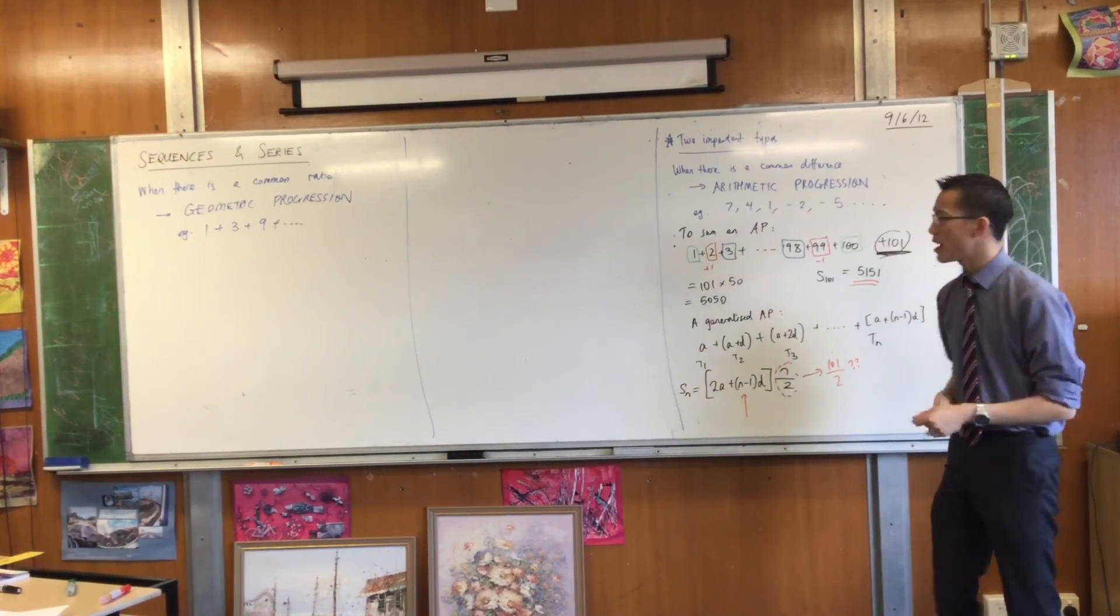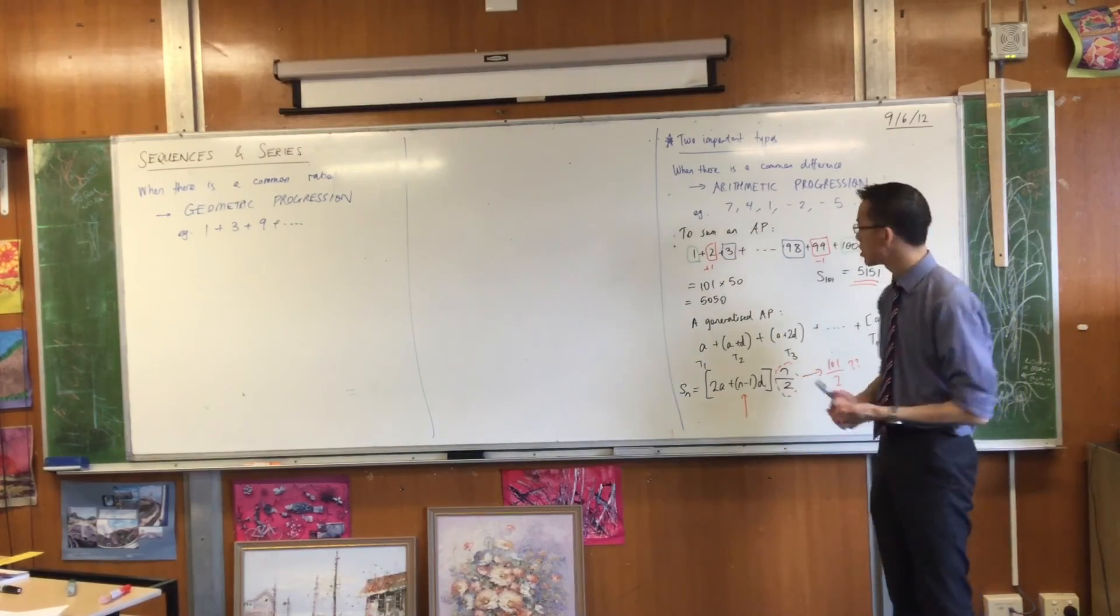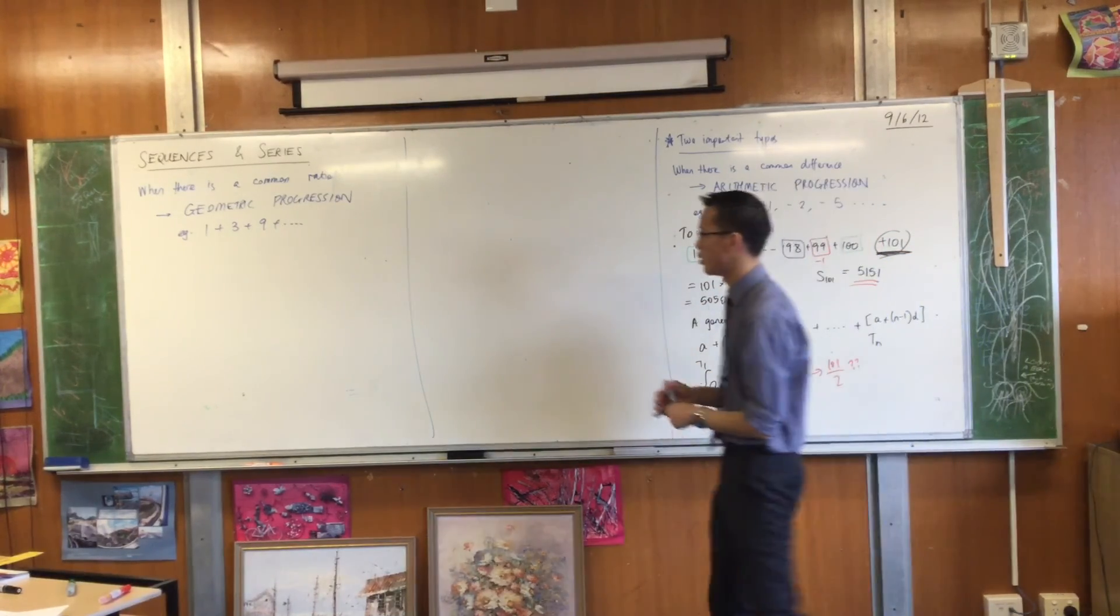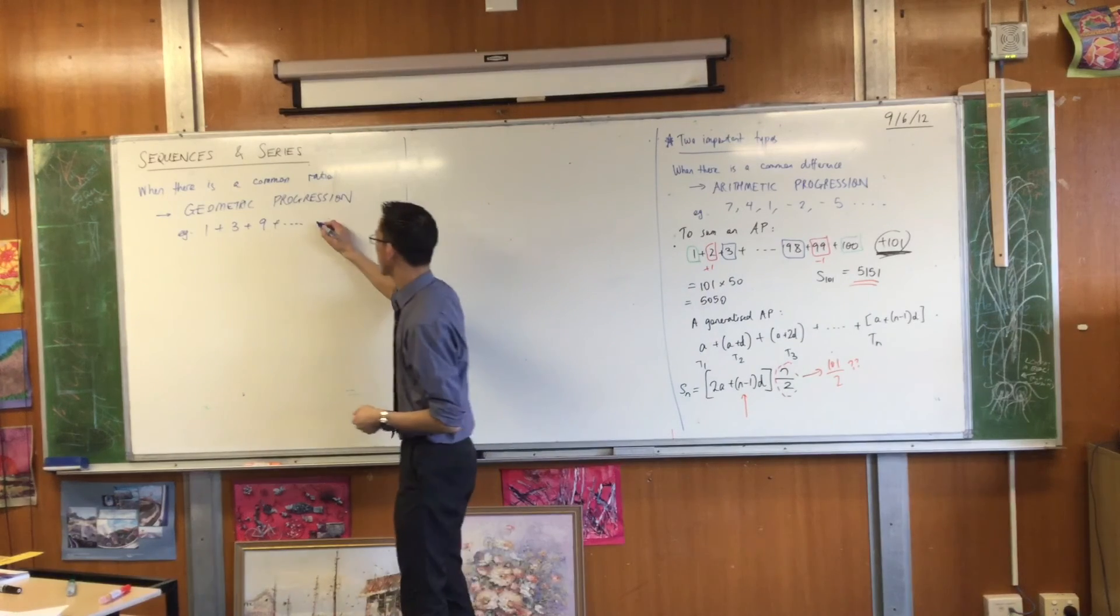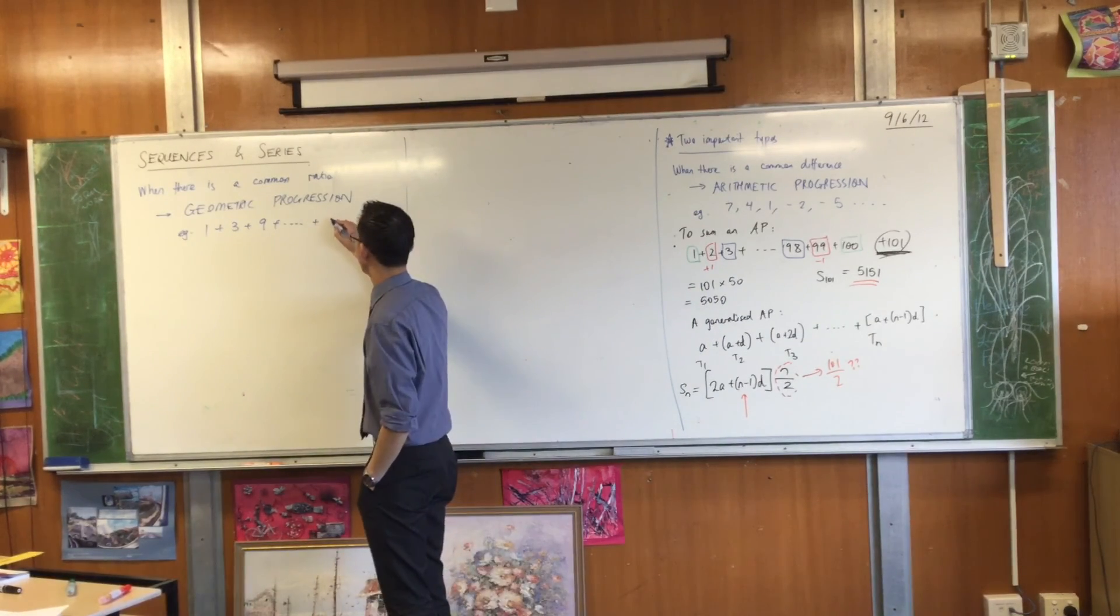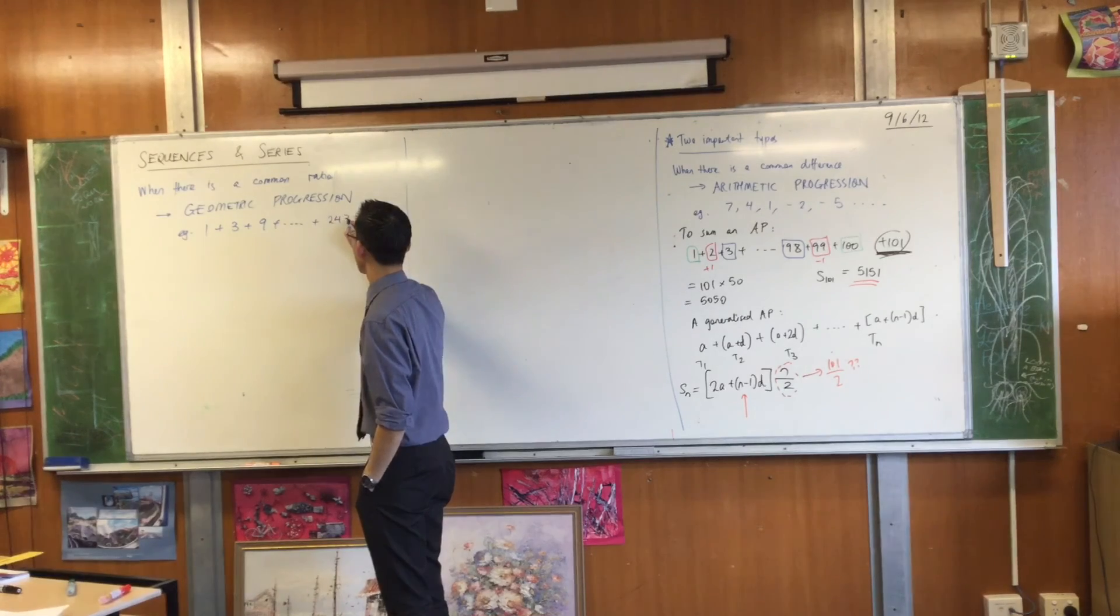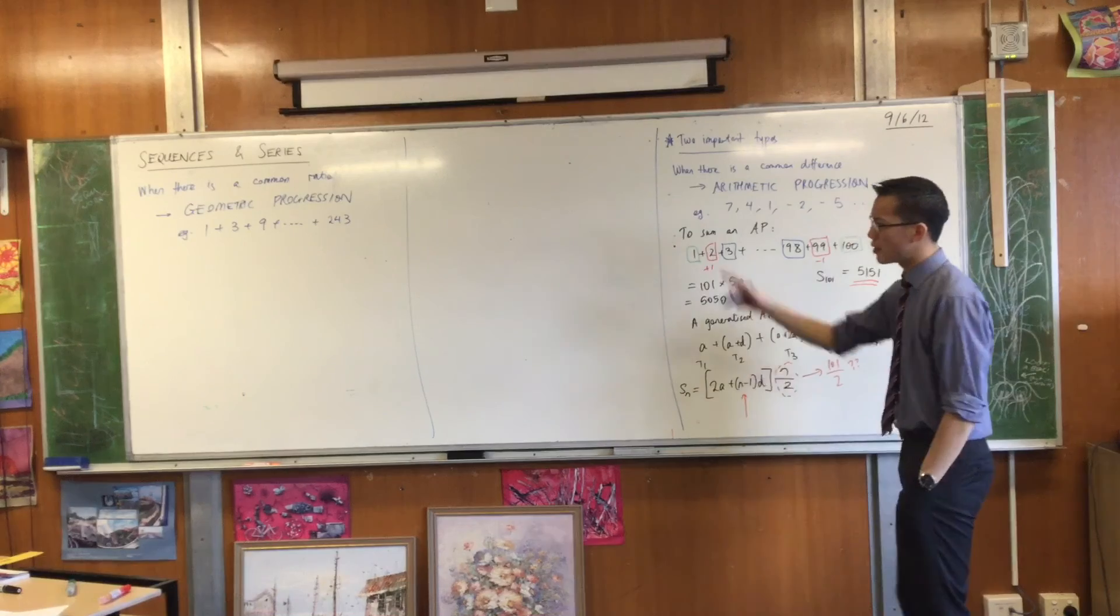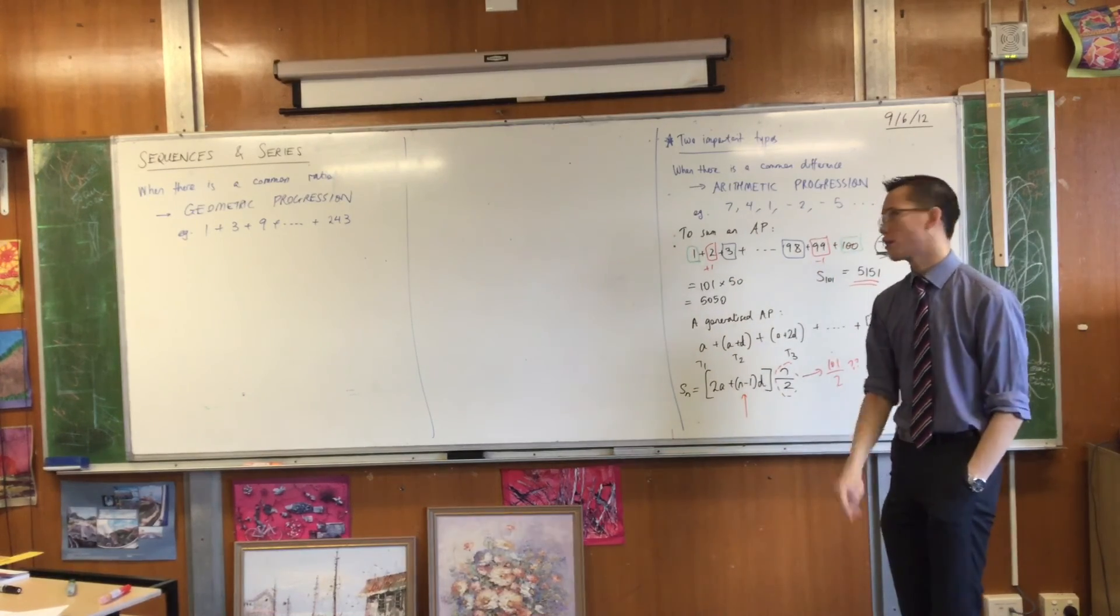Now I'm going to pose this same question to you. How do you sum that kind of progression? How do you sum this series? Evaluate what it's equal to. For example, suppose I stopped somewhere like, let's go with 243. That's a power of three. How are we going to do this?